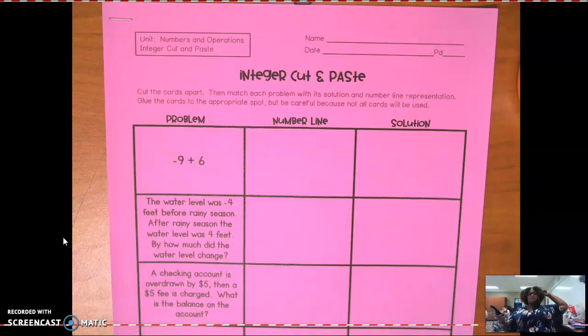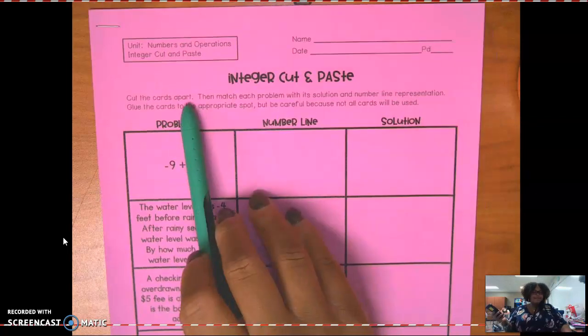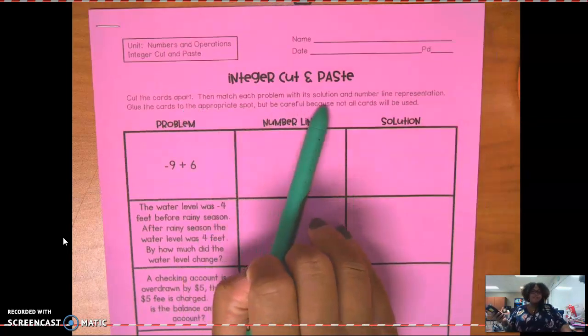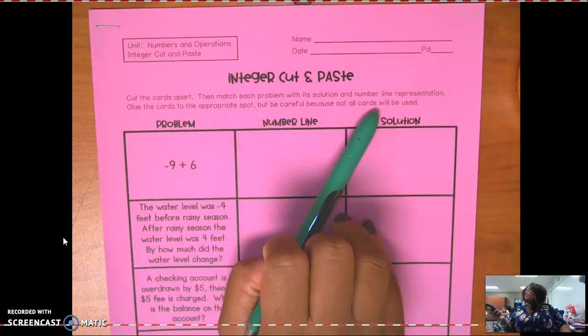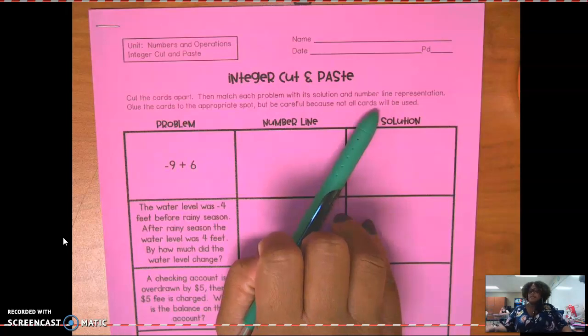What about integer operations? Cut the cards apart. Then match each problem with the solution and number line representation. What do you mean by number line representation, Ms. Starlink?